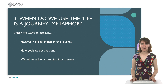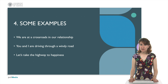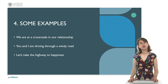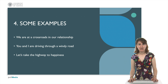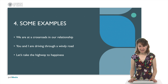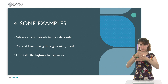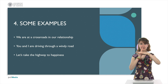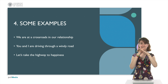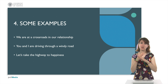Let us give some examples. 'We are at a crossroads in our relationship.' 'You and I are driving through a windy road.' And 'let's take the highway to happiness.' In the first one, we are at a crossroads — this is where two roads intersect — and in this case, our relationship could be at a crossroads when we don't know what to do with it, we don't know which direction to take. That's why we say that a relationship can be at crossroads.